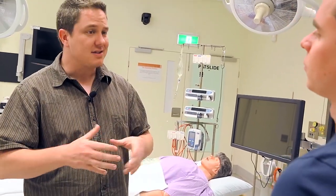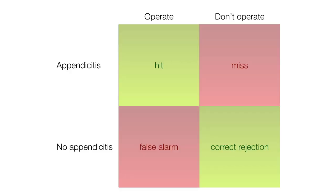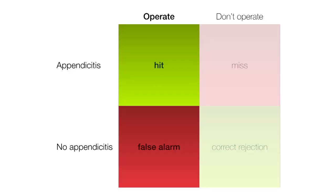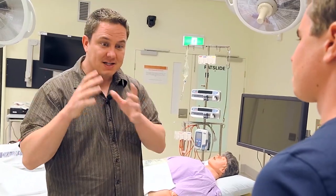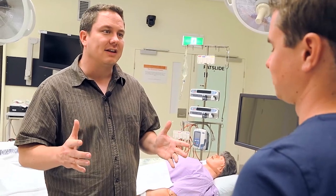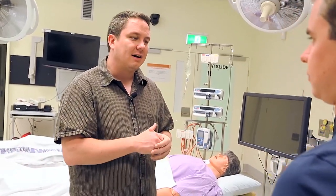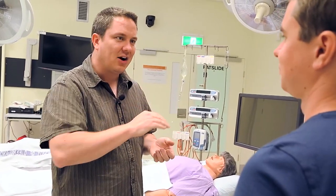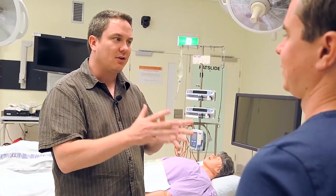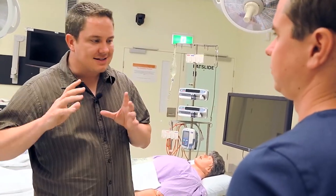When we talk about a response bias, we're talking about a tendency — a bias to say, in this case, operate. The reason you'd want to err on the side of caution and operate is because of the very severe cost of a miss — somebody could die from a missed inflamed appendix. So if a patient comes in with a complaint of a sore pelvis, you take that very seriously, err on the side of caution, and as a result you might take out the odd healthy appendix, but you'll also take out a lot of inflamed ones. That's the idea of a response bias.